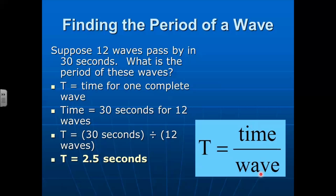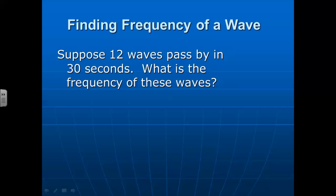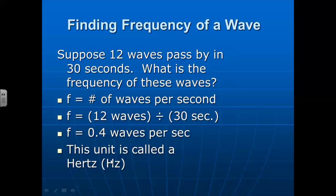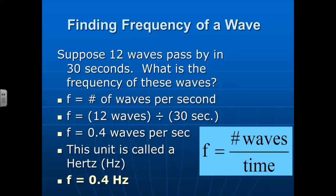Now let's do the same problem, but finding the frequency of the wave. So once again, suppose that we have 12 waves that pass by in 30 seconds. What's the frequency? Well, the frequency is the number of waves per second. So we take the number of waves, and we divide it by the total amount of time. And we get 0.4 hertz. And the unit of frequency is hertz, Hz. So we get a frequency is 0.4 hertz. So frequency is the total number of waves divided by the total amount of time.